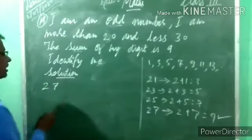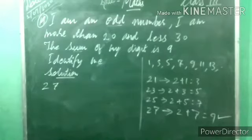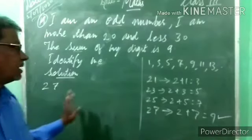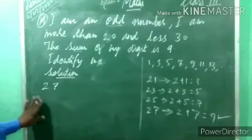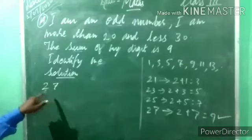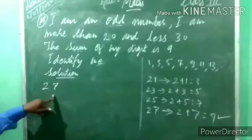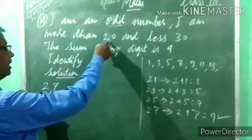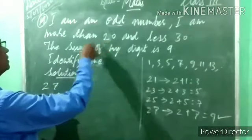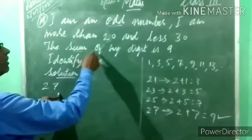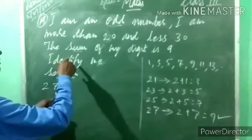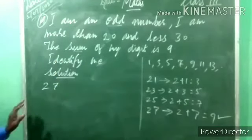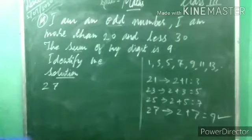In short, we write 27. So, understood? Do the rough work first and you will get the answer. 27 is an odd number, more than 20, less than 30, and 2 plus 7 equals 9. No doubt.